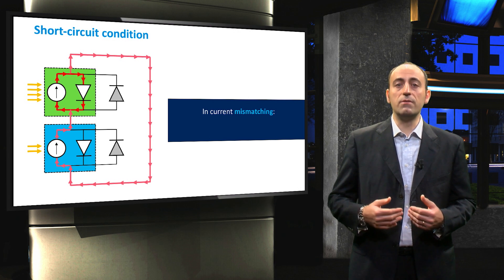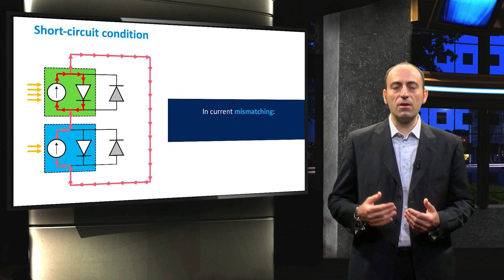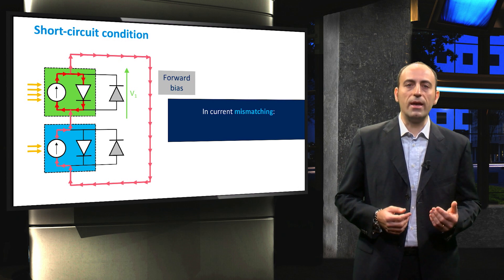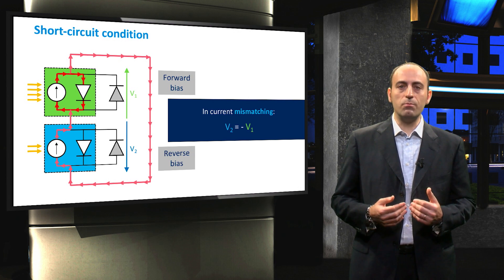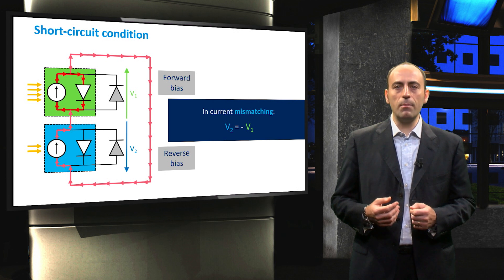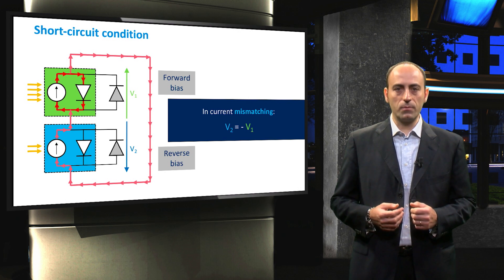The positive effect of the bypass diode kicks in when there is a current mismatch. Here, the green cell receives more irradiance and has a forward bias. On the other hand, the partially shaded blue cell is reverse biased. In these conditions, the bypass diode is thus activated.